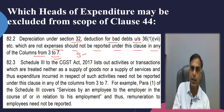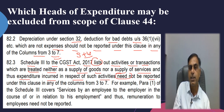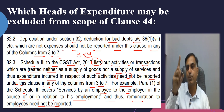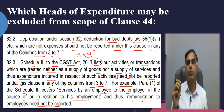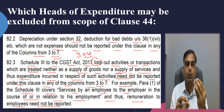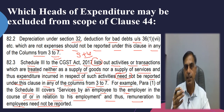Similarly, you may have a question about salary and wages. The CA Institute in the Guidance Note further says: Schedule 3 of the CGST Act 2017 lists out activities or transactions which are treated neither as supply of goods nor as supply of services, and thus expenditure incurred in respect of such activities need not be reported under this clause in any of the columns from 3 to 7. For example, Para 1 of Schedule 3 covers services by an employee to the employer in the course of or in relation to his employment, and thus remuneration to employees need not be reported. So we now have clarity on three exclusions: depreciation, bad debts, and remuneration to employees — whether called salary or wages.